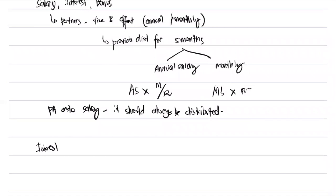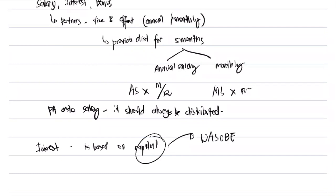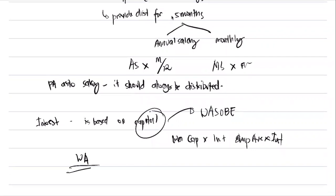Next, for interest. Normally, interest is based on capital — either weighted average capital or simple average capital multiplied by the interest rate. When we talk about interest, it is based on your capital. If the agreement provides that capital interest is based on weighted average capital, first get the weighted average capital of each partner, then multiply by the interest rate.